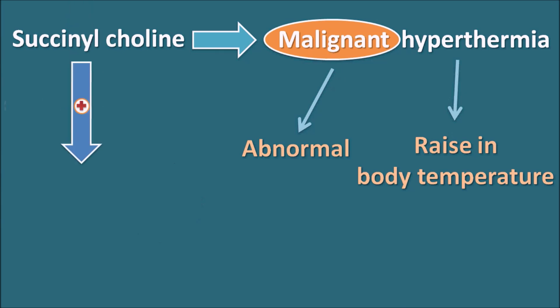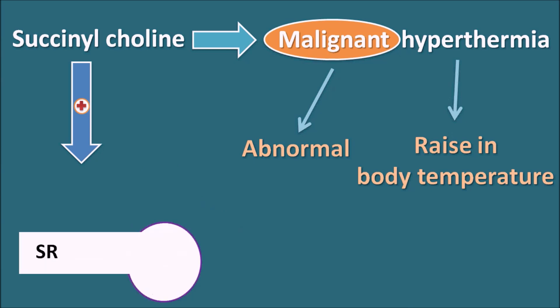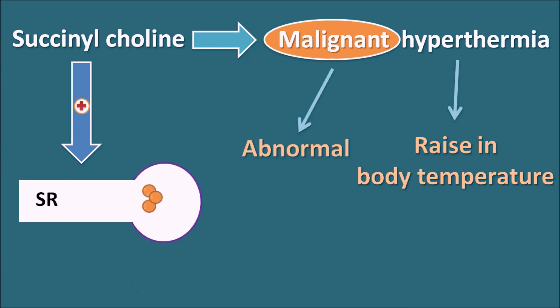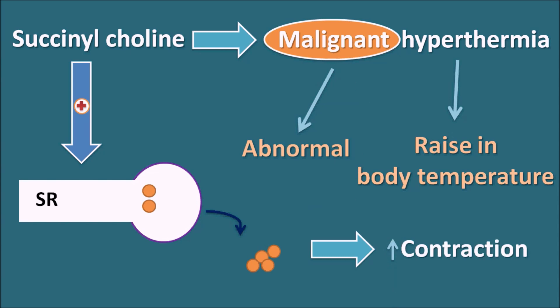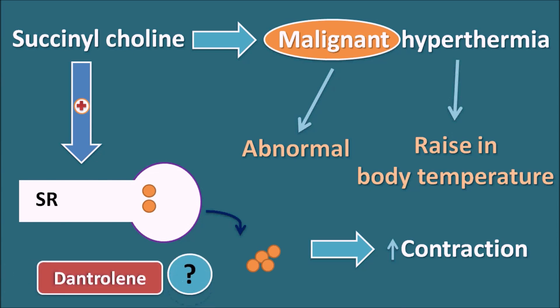Succinylcholine acts on the skeletal muscle, specifically on the sarcoplasmic reticulum. By activation of the skeletal muscle, calcium is released from the sarcoplasmic reticulum. Once this calcium is released into the cytoplasm, it results in the contraction of the skeletal muscle. In this way, succinylcholine increases skeletal muscle contraction, which results in heat generation and an abnormal raise in body temperature. Now let us see how dantrolene acts as an antidote for succinylcholine-induced malignant hyperthermia.